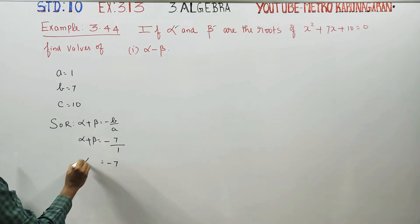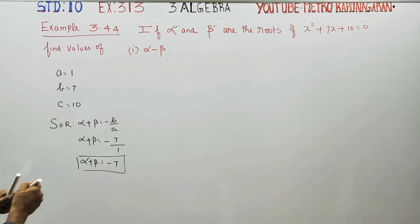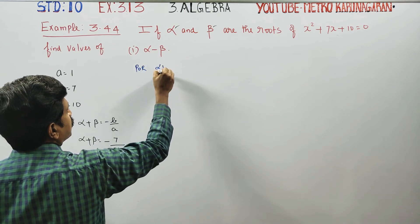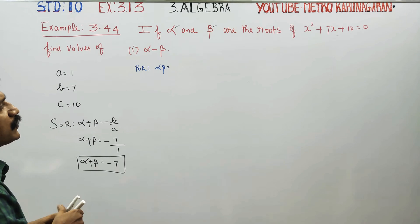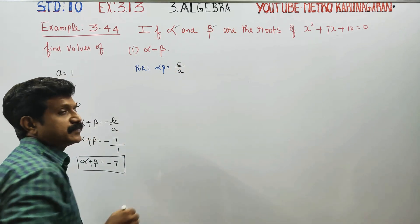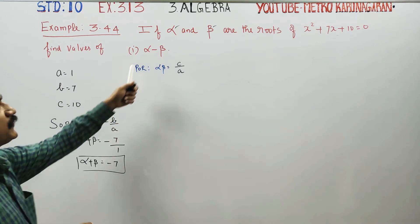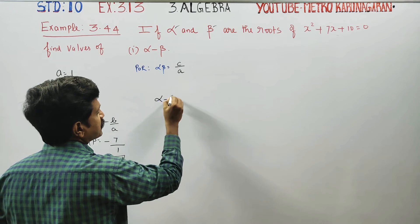The answer for alpha plus beta is minus 7. This is the sum of the roots. The product of the roots, alpha into beta, equals c by a, which is 10 by 1.